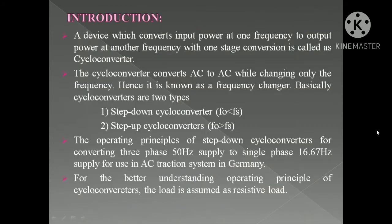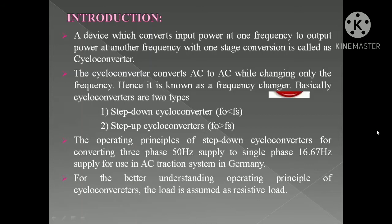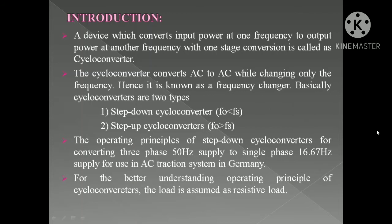The cycloconverter is a frequency changer device working as a converter for AC to AC applications. It has two configurations: step up and step down. Whenever the output frequency is less than the supply frequency it is step down, and whenever the output frequency is higher than the supply frequency it is step up.